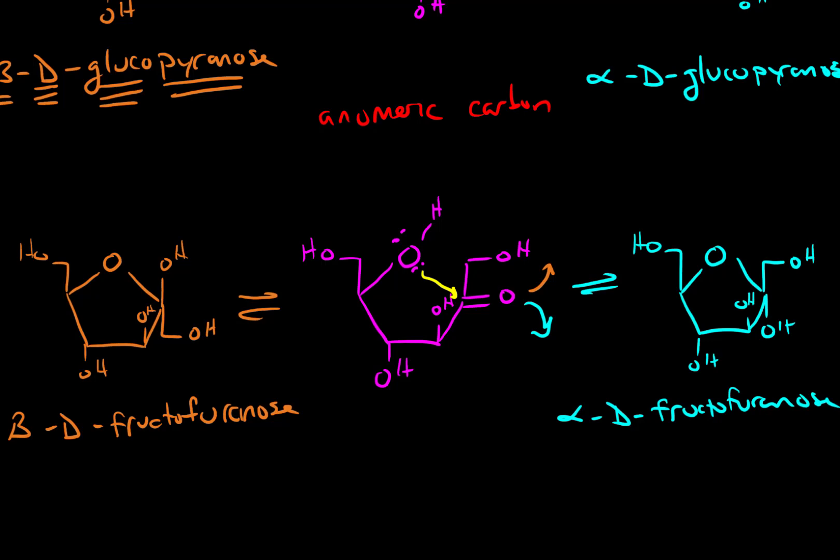So that's really it for naming the cyclical form of sugars. When you do so, you need to establish whether the anomeric carbon has the alcohol group pointing up or down. And that tells you if it's in the beta or alpha orientation. And you need to figure out if the ring is a five-membered ring, that's a furanose, or a six-membered ring, that's a pyranose.